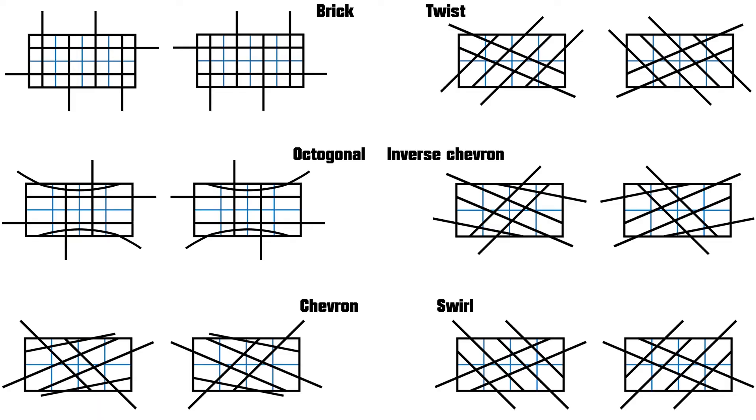By this definition of stitches, there exists six stitches for every hand or rotation. The brick, twist, throw, chevron, inverse chevron, and octagonal. And these are their notations.